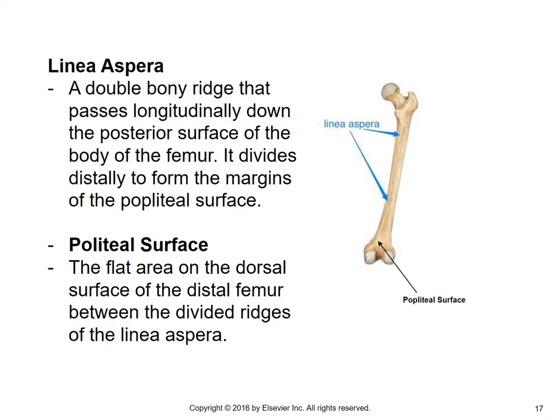Along the posterior aspect of the body — remember, the body is the shaft or diaphysis — you have something called the linea aspera. The linea aspera is a double bony ridge that passes longitudinally down the posterior surface of the body, and as it gets distally, it divides to form the margins of what's referred to as the popliteal surface. The popliteal surface is the flat area on the dorsal surface of the distal femur between the divided ridges of the linea aspera.